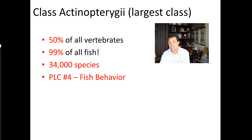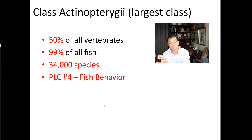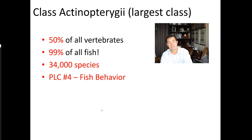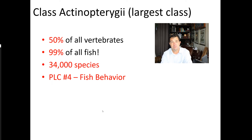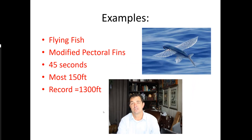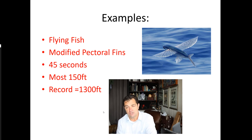The last group, Actinopterygii, is enormous — it contains 50% of all vertebrates and 99% of all fish, with about 34,000 species. This group will be explored further in PLC number four, where you'll look at fish behavior. It's a really big group with lots of fascinating adaptations, so I'll just mention a couple of examples here.